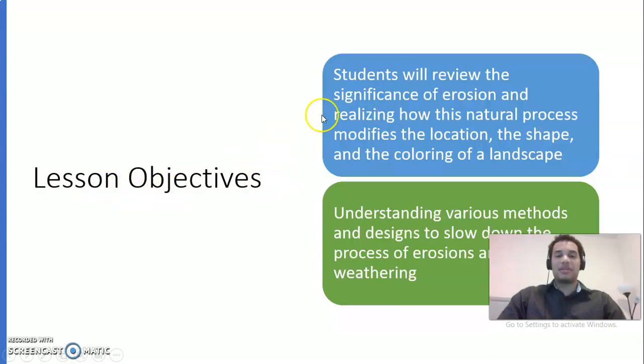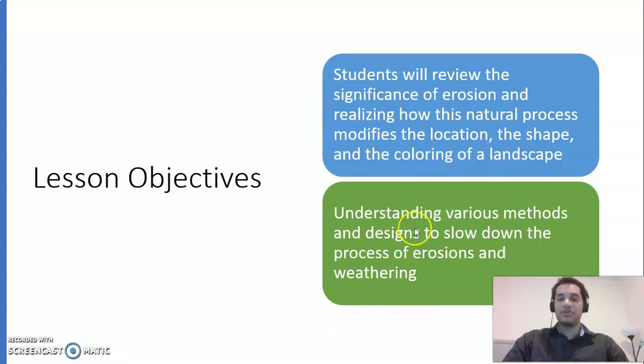All right, so our lesson objectives. Students will review the significance of erosion and realizing how this natural process modifies the location, the shape, and the coloring of a landscape. Two, we're going to understand various methods and designs to slow down the process of erosions and weathering.